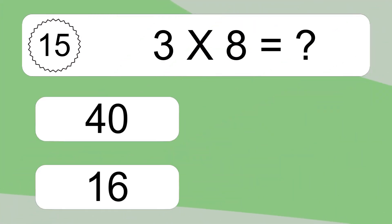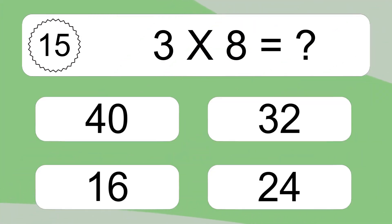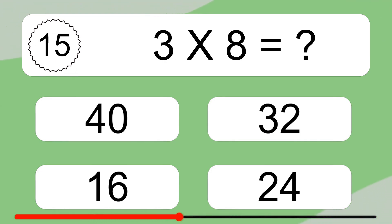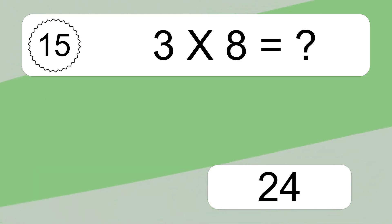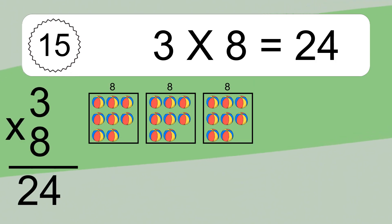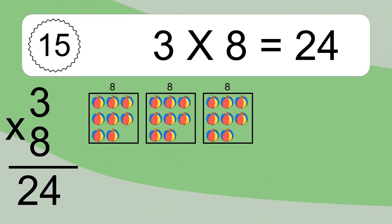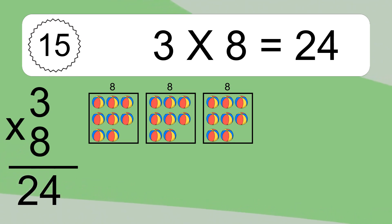3 times 8 equals what? 3 times 8 equals 24. We have 3 boxes and each box has 8 colorful balls inside. If you count all the balls in all the boxes together, you will have 3 times 8 balls. This equals 24 balls.